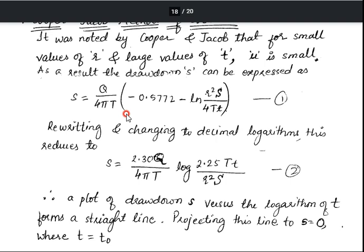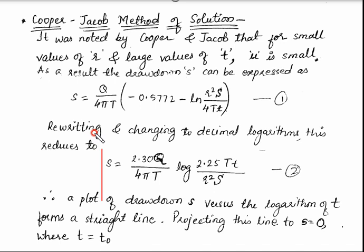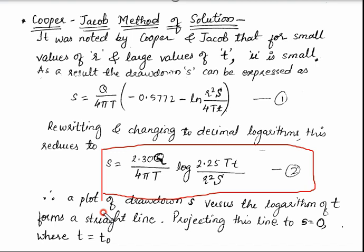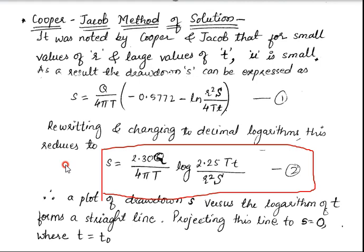If you rewrite and change to decimal logarithms, then this equation can be written as s = (2.30Q / 4πT) × log(2.25Tt / r²S). This is Equation 2 — the Cooper-Jacob equation — and it is the method of solution for s, that is drawdown.